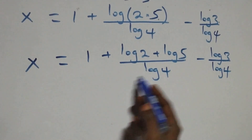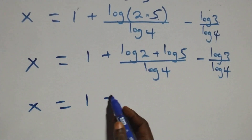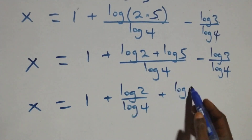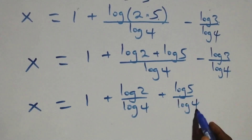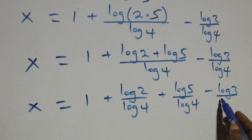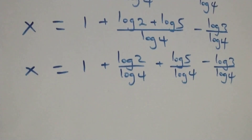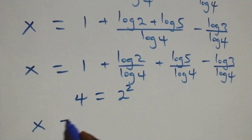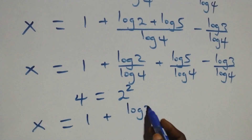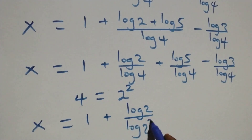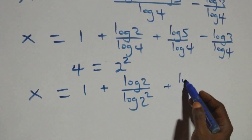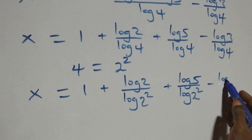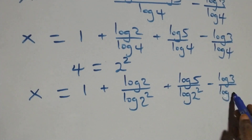Here we separate this into two fractions: x equals to 1 plus log 2 over log 4, plus log 5 over log 4, minus log 3 over log 4. Now, 4 can be written as 2 times 2, that is 2 squared. So what we have becomes x equals to 1 plus log 2 over log(2²), plus log 5 over log(2²), minus log 3 over log(2²).